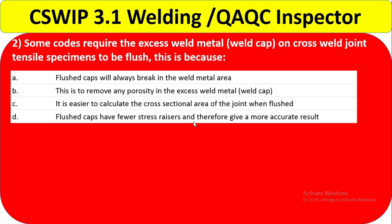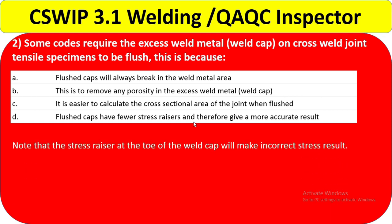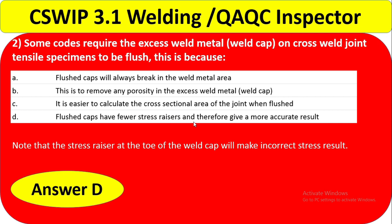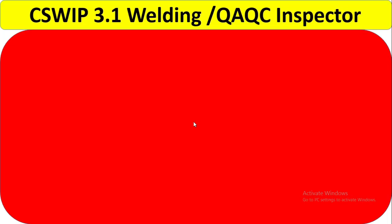Option C — it is easier to calculate the cross-sectional area without the reinforcement — is wrong because you calculate with the correct reinforcement, not without it. Option D — flush caps have fewer stress risers and therefore give a more accurate result — is correct. Excess reinforcement generates more stress at the weld toe, giving incorrect stress results. The answer is D.